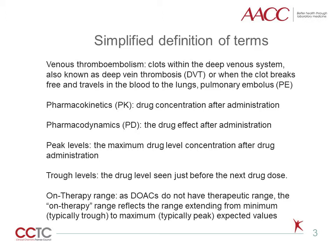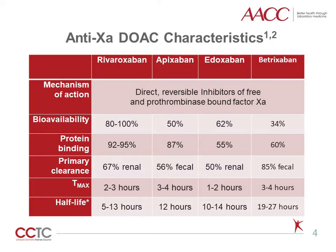Venous thromboembolism represents clots within veins, most commonly deep vein thrombosis (DVT) and pulmonary embolism (PE). Pharmacokinetics is drug concentration after administration. Pharmacodynamics is the drug effect after drug administration. Peak levels are the maximum drug concentration after drug administration, and trough levels are the drug level just before the next dose. Therapeutic range is the recommended target drug effect, usually either a concentration or test effect, such as the INR used when patients are on warfarin therapy.